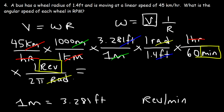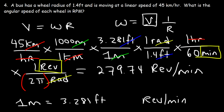The calculation is 45 × 1,000 × 3.281 ÷ 1.4 ÷ 60 ÷ (2π), which equals approximately 279.74 revolutions per minute — or roughly 280 RPMs.